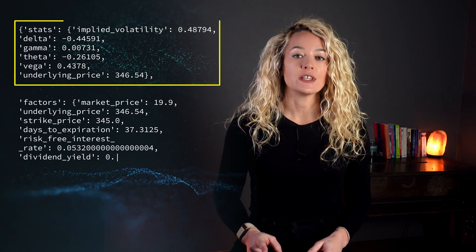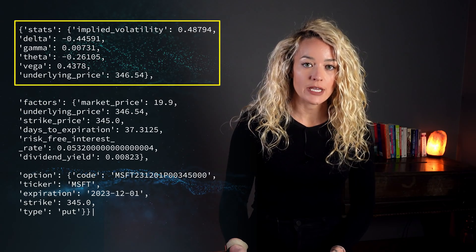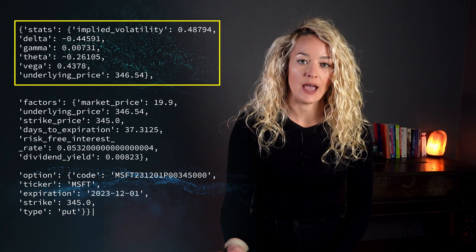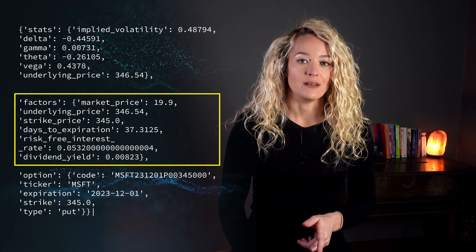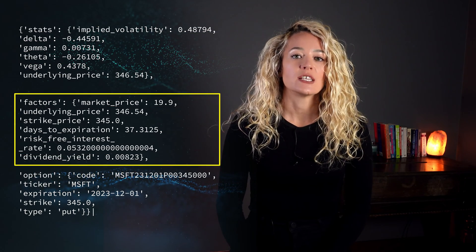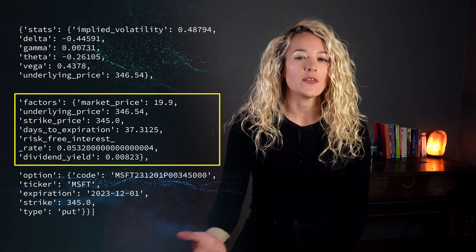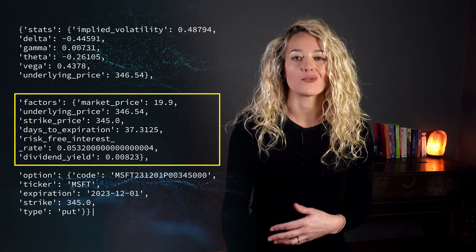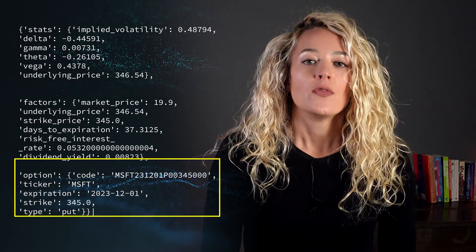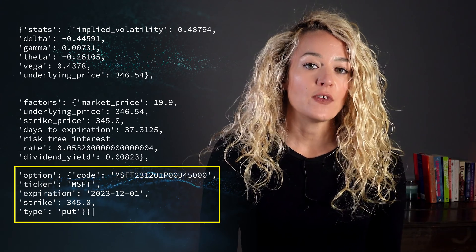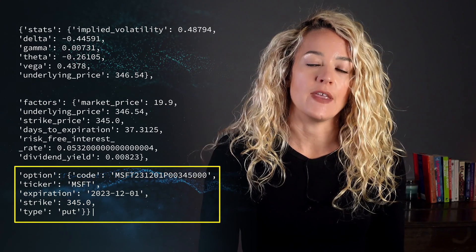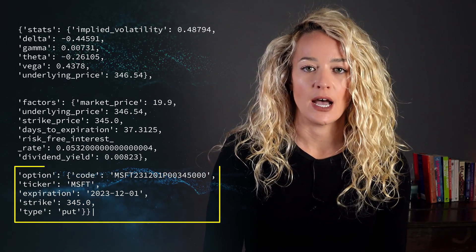The first field is stats, which contains the option Greeks, implied volatility, and underlying price. The second one is factors, which has price-related information along with other details like risk-free interest rate and dividend yield. The third and final field is option, which contains some basic information about the options contract.